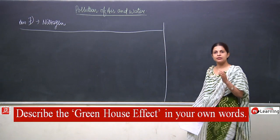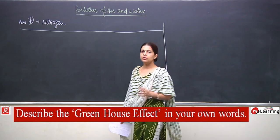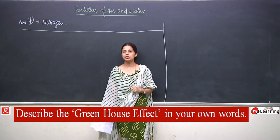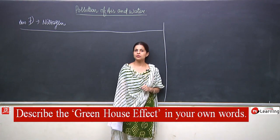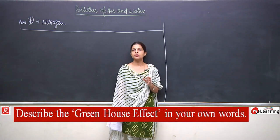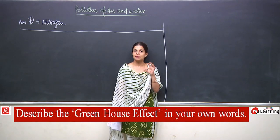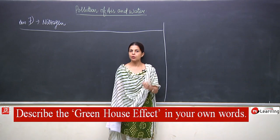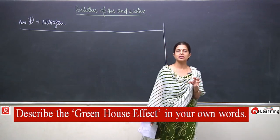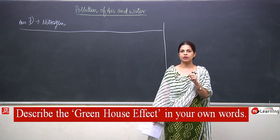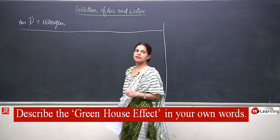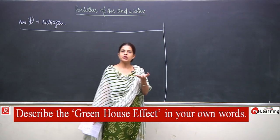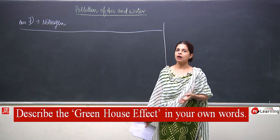For our survival this is very important. Carbon dioxide is very useful for plants, but another equally important use is that it traps the sunlight and does not allow it to go back. When carbon dioxide traps the heat, the temperature of the earth increases.